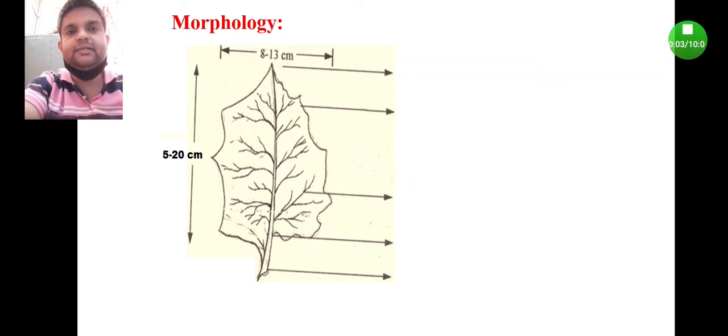Coming to the result and discussion part, we'll examine the morphology of the datura leaf. In this diagram you can see the structure of a datura leaf. It is relatively large, approximately 5 to 20 centimeters in length and 8 to 13 centimeters in diameter.